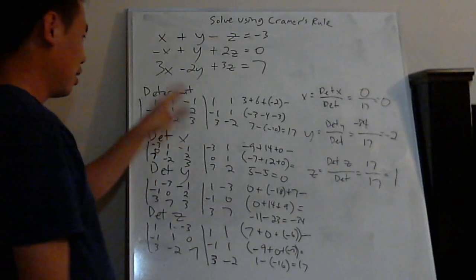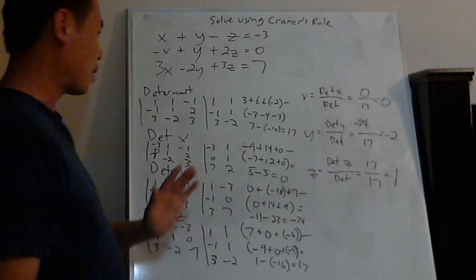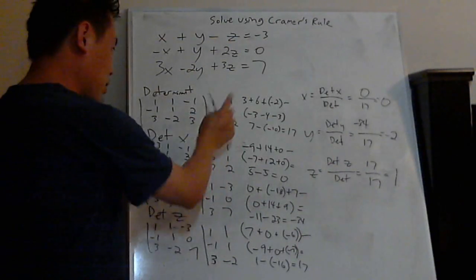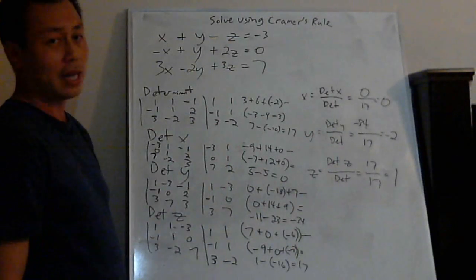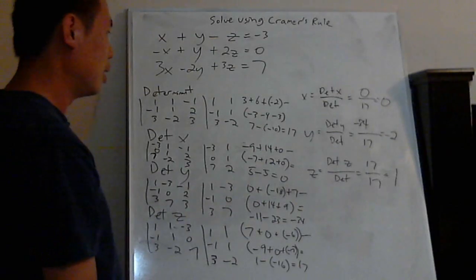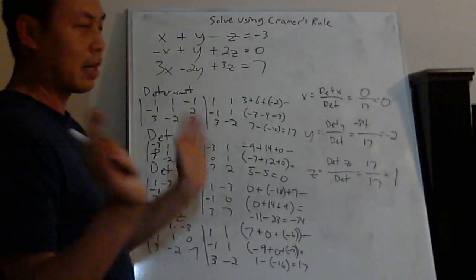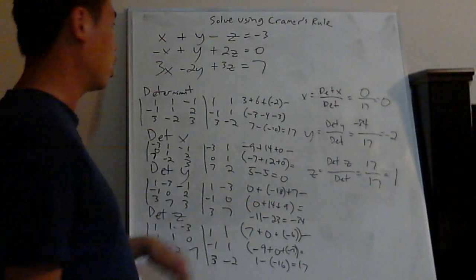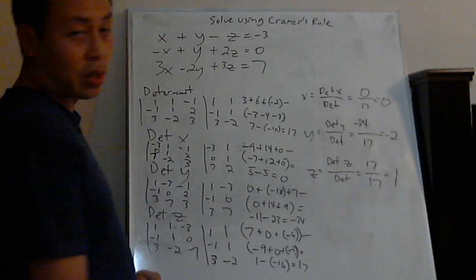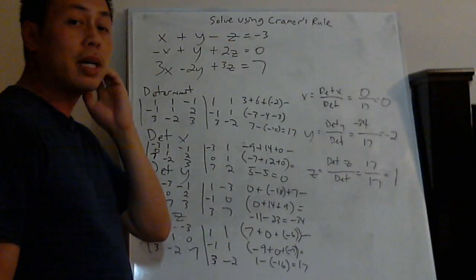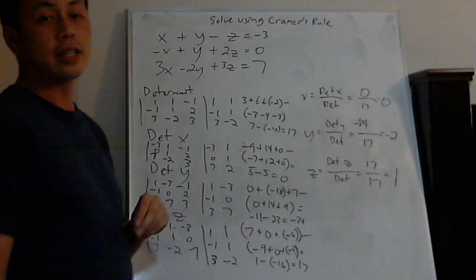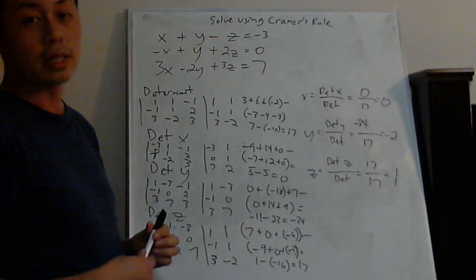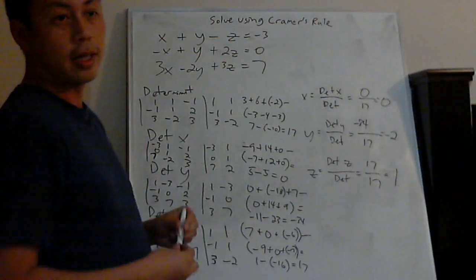Columns method is the best method. If your teacher lets you use the columns method, do it to find determinants. The other way takes more time and leads to more mistakes. This is the best method. If you have any questions, leave comments or any suggestions, let me know for any videos you're looking for. Thank you.